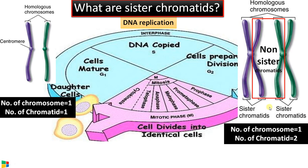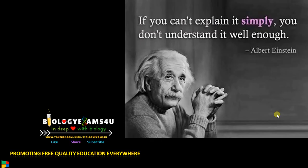So sister chromatids are duplicated copies of the same chromosome, exactly identical, held together at a common centromere. Whereas non-sister chromatids are different chromatids of a homologous chromosome pair, genetically different as one comes from the father and one comes from the mother. Hope you are clear with this concept. Thank you so much for your support.